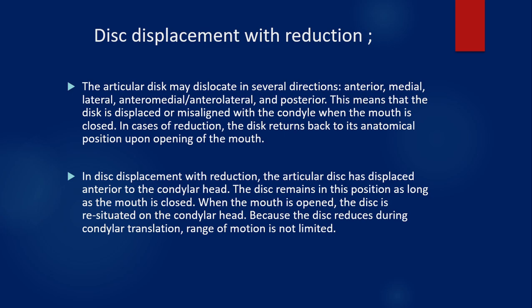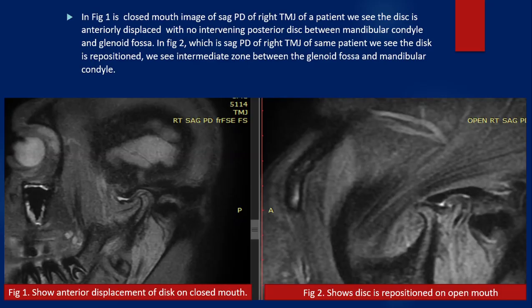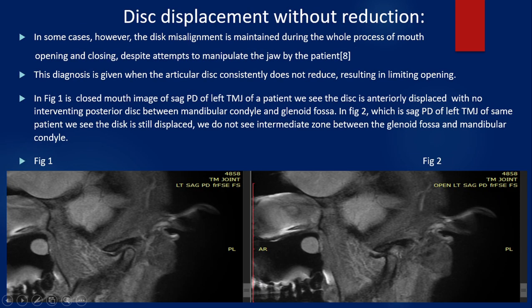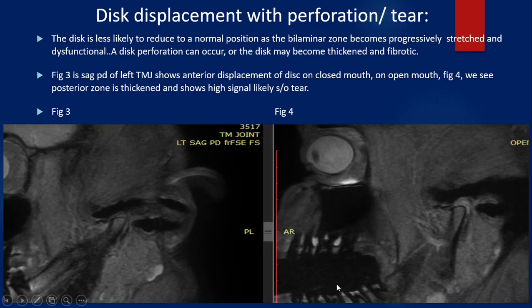Anterior displacement with reduction means the disc is displaced from the normal line with the condyle when the mouth is closed. In case of reduction, the disc returns back to its anatomical position when opening the mouth spontaneously. The disc remains displaced as long as the mouth is closed, and once the mouth is opened, it gets repositioned — as shown in the figure. For displacement without reduction, even after opening the mouth, the disc does not spontaneously return to its anatomical position. As seen here, it is displaced in the closed position and remains displaced during opening.